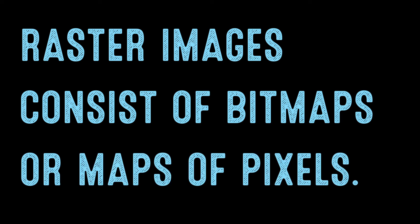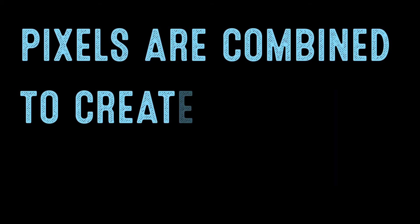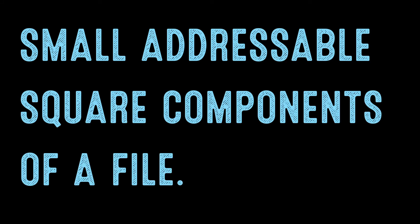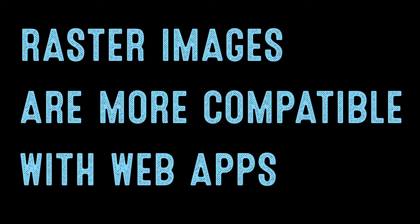What are raster images? Raster images consist of bitmaps or maps of pixels. Pixels are combined to create 2D images from small addressable square components of a file. What is an advantage of a raster image? Raster images are more compatible with web apps.